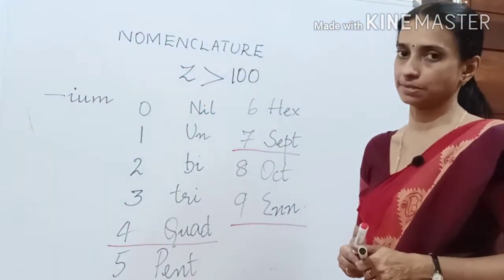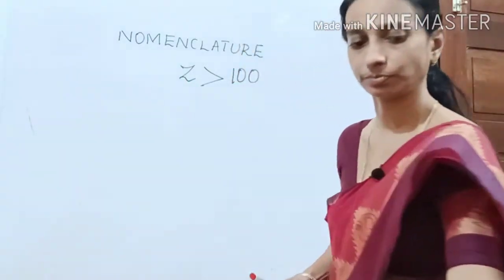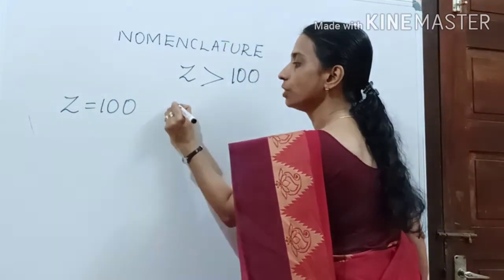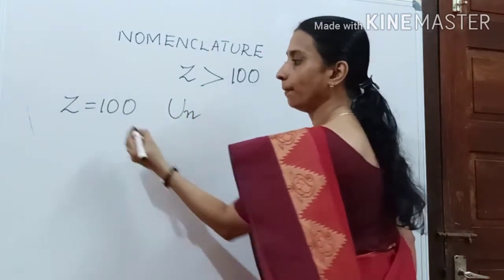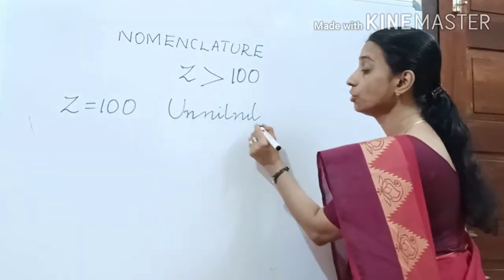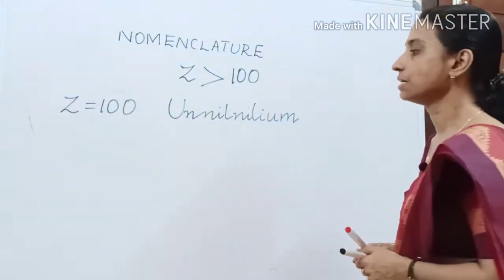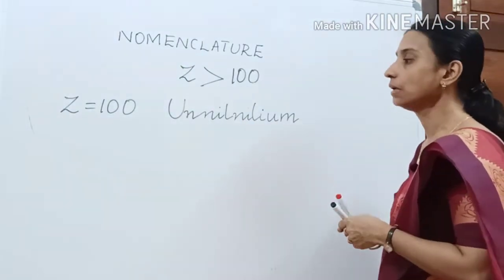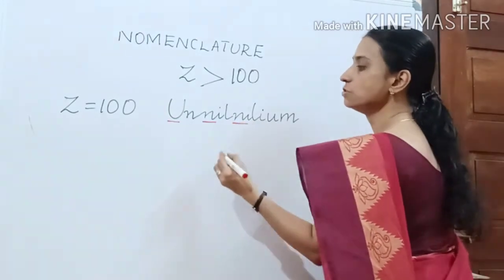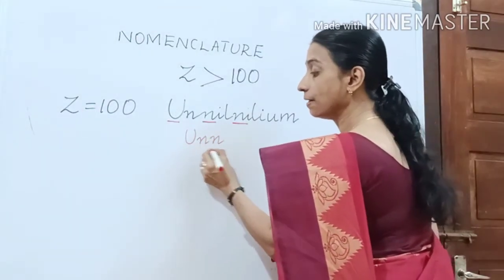So we shall begin naming the elements. We begin with Z value 100. When Z value is 100, the first numeral is 1, so it should begin with 'un'. Then next is 0, which is 'nil', and again 0 is 'nil'. We end with 'ium'. So the name of the element with Z value 100 is 'unnilnilium'. The symbol takes the first letter of each prefix — 'Unn' — beginning with a capital letter followed by small letters.